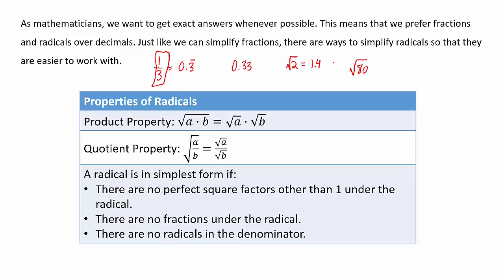Here are the properties we can use to simplify radicals. If we have a square root and we can think of the number under it as a product, we can separate those numbers into two different square roots. For example, the square root of 80 is the same as the square root of 8 times the square root of 10, or the square root of 2 times the square root of 40. We'll learn what kinds of splits are most helpful.